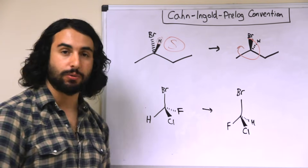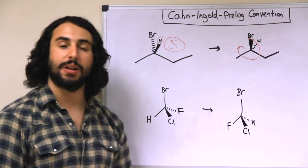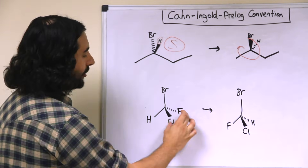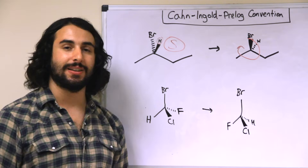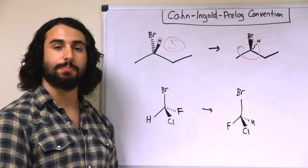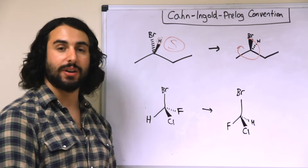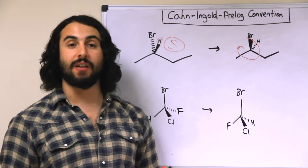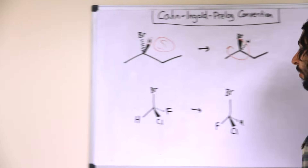Let's take a look at another example. Here the lowest priority group — the hydrogen — is in the plane of the board. Switching the dash and wedge bonds is not going to help, because that is not going to change the positioning of the lowest priority group.